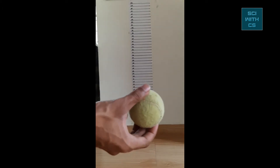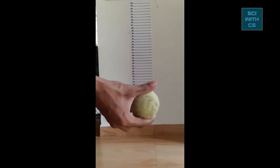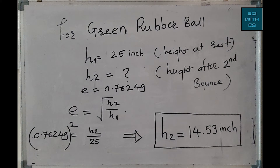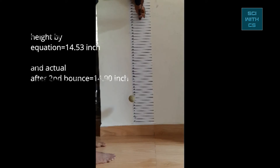Now let's use the second ball — a tennis ball made of rubber material — and calculate the coefficient of restitution for it using the same formula. We have calculated e and, solving the math, also get the predicted height of the second bounce. Let's see the actual reading and compare both together. This is the first bounce height, and the height after the second bounce as calculated versus the actual one — we can see the difference between both.